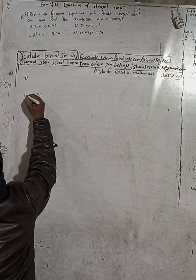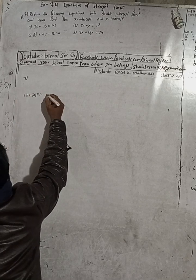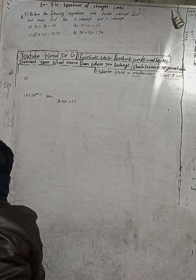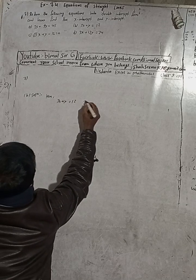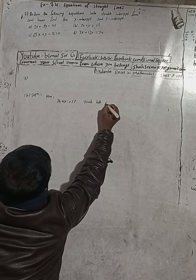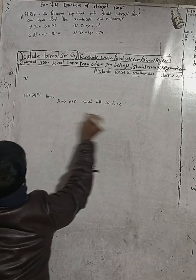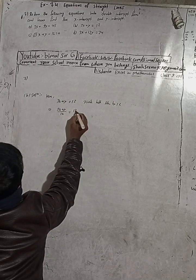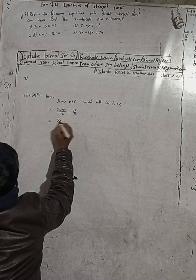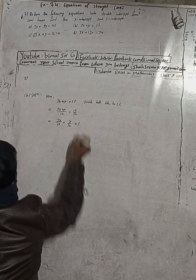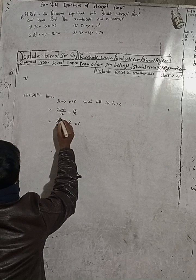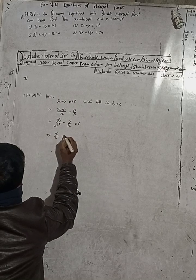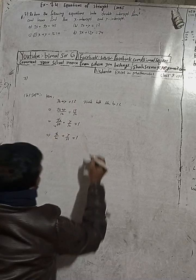Now part (b). The equation given is 3x plus y is equal to 12. Divide both sides by 12. This gives 3x plus y by 12 is equal to 12 divided by 12, so 3x by 12 plus y by 12 equals 1. Cancelling 3 from 12 gives x by 4 plus y by 12 is equal to 1.